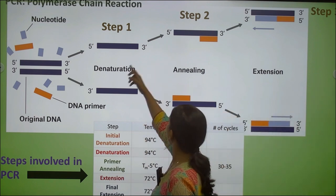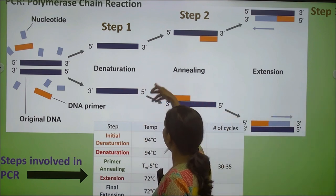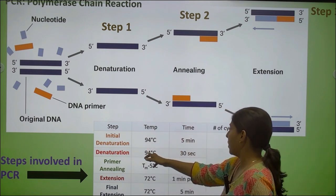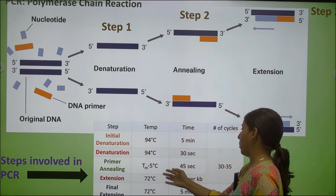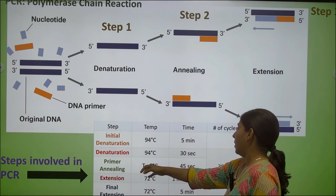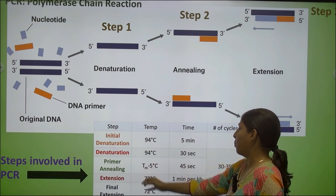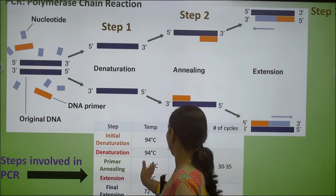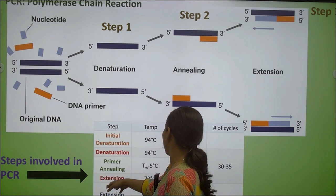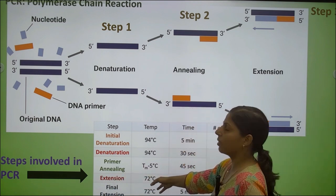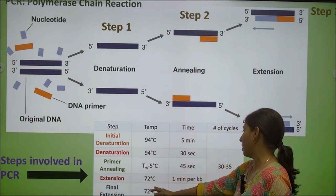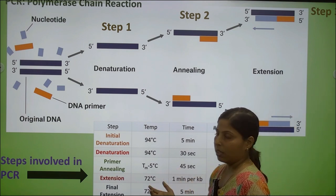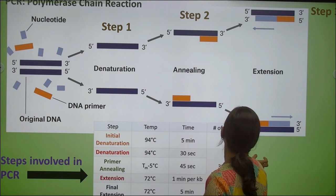These three steps — denaturation, primer annealing, and extension — are repeated continuously in the reaction. Denaturation temperature is 94 degrees centigrade. In the next slide we will see how melting temperature is calculated, which is important for primer annealing. Extension, meaning DNA synthesis, occurs at 72 degrees centigrade, and the time depends upon the length of the DNA segment to be amplified.